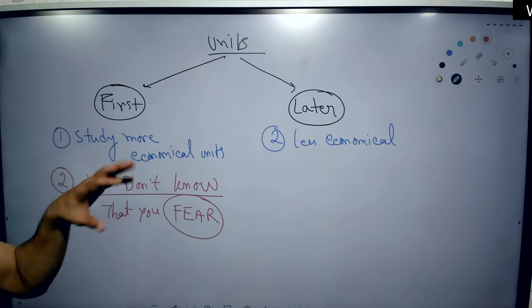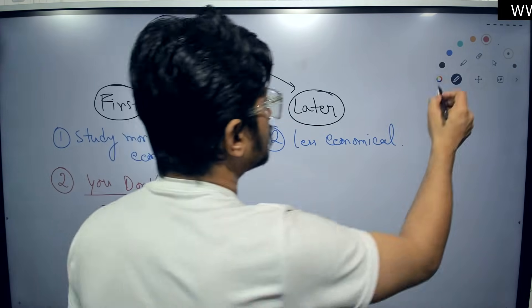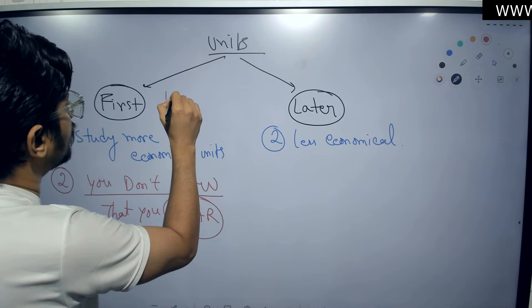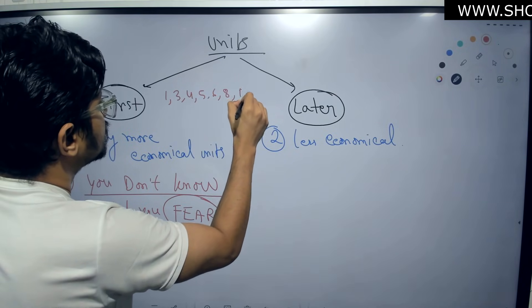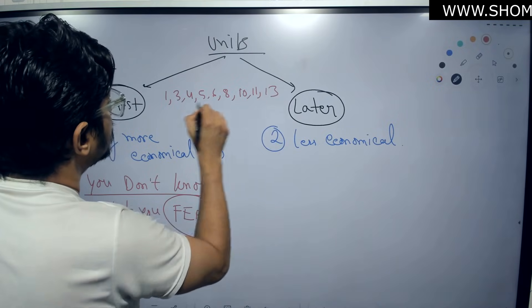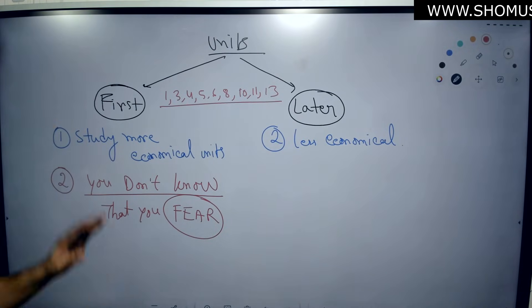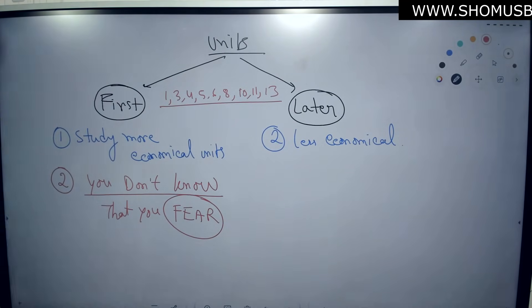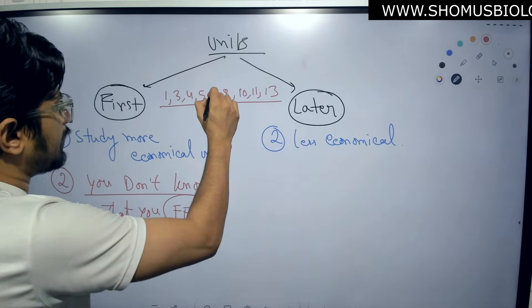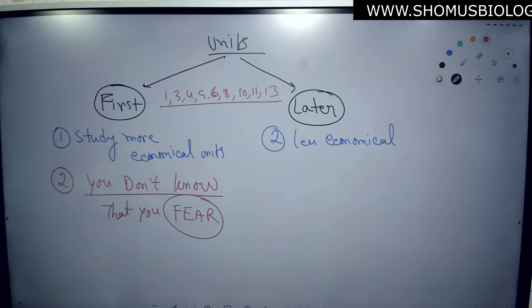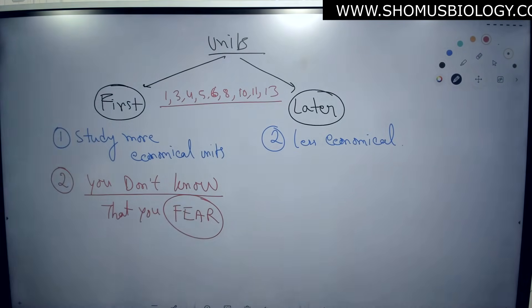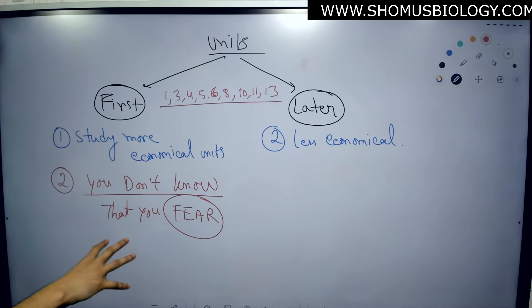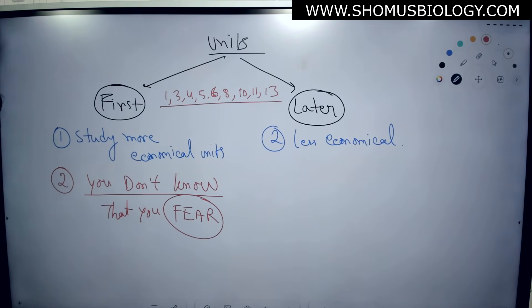First, find out which units are important. The important units are: 1, 3, 4, 5, 6, 8, 10, 11, and 13. All units are equally important, but this reflects my personal preference. From all these important units, identify the ones you fear and prepare them first.